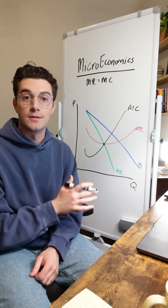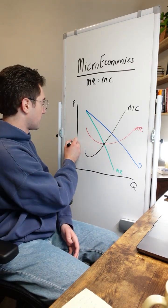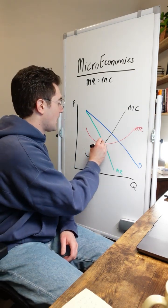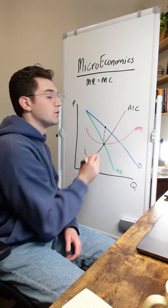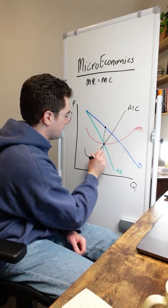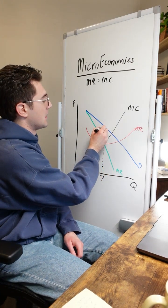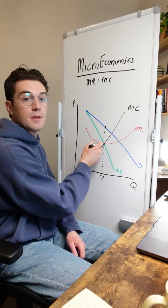Now the easiest mistake to make here is to think that you're done and that you just go to the left here to find price. But with monopolistic firms, you got to go up to the demand curve to derive price. Because at this profit maximizing number of units, we'll call it seven, consumers are willing to pay up to the demand curve.